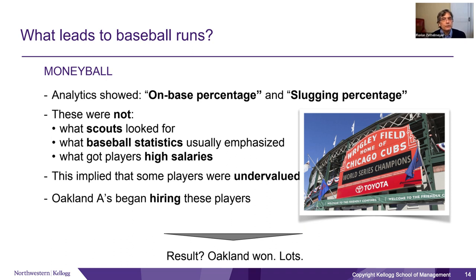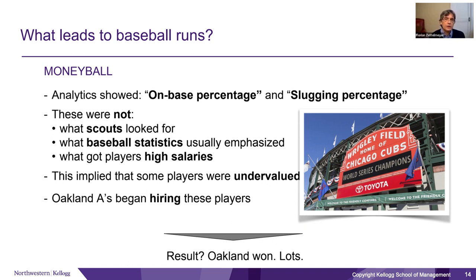To answer this question, they did some analytics. The analytics showed that what matters most for runs scored was on-base percentage and slugging percentage. It doesn't really matter what these are, but it does matter what they're not — namely, they're not what scouts were looking for, not what baseball statistics usually emphasized, and most importantly, not what players got high salaries for. Because of that, de Podesta and Billy Bean believed there were some players that were undervalued — players that did badly on traditional metrics but really well on the metrics that actually mattered.